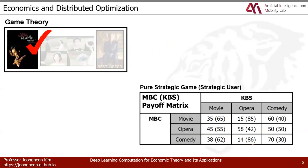Game theory enables decision-making under uncertainty. Suppose we have two players, KBS and NBC — famous broadcasting companies in South Korea. This is a payoff matrix showing their competition for viewers. NBC may play movie, opera, or comedy; KBS may do the same. If both play movie, NBC takes 35% and KBS takes 65% of the audience.